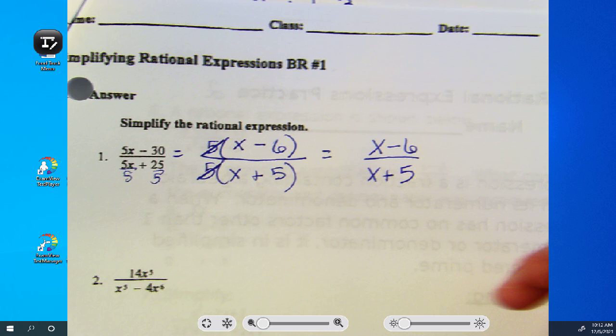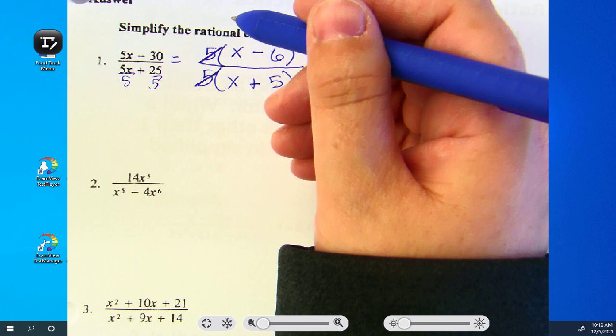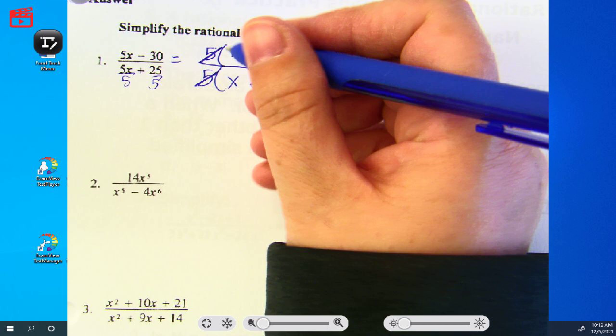Okay. Number 2. Numerator, can I do anything with it? It's a monomial. Is there anything I can do with it? No, it's a monomial, so bring it over.